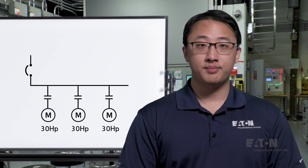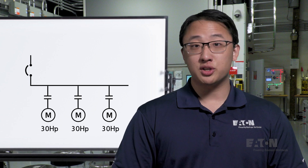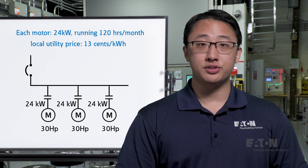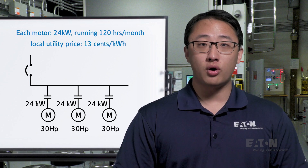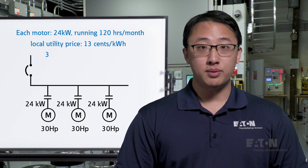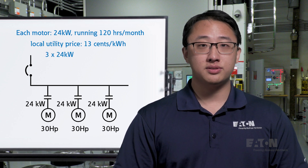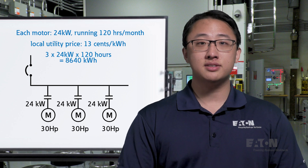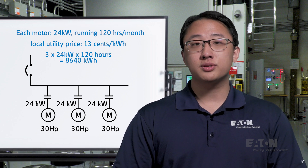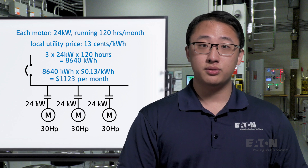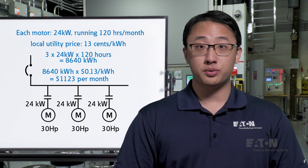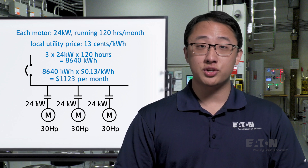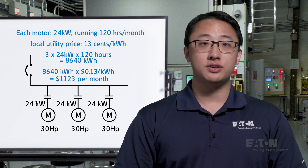Now it's time to talk about energy and money. If each motor uses about 24 kilowatts and is running on average 120 hours a month, and the local utility price is 13 cents per kilowatt-hour, then the energy used per month for all three motors is calculated as: 3 motors × 24 kilowatts × 120 hours = 8,640 kilowatt-hours. Multiplying by 13 cents per kilowatt-hour gives $1,123 per month. You can imagine why it's so important for industrial facilities, which have many more and much heavier loads, to find ways to use less energy to save money.